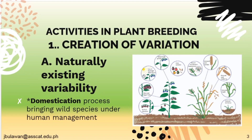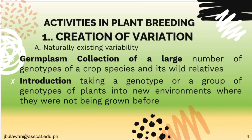The topic for today is the Creation of Variation. First, we have Naturally Existing Variability. There is a domestication process bringing wild species under human management. Naturally Existing Variability is a germplasm collection of a large number of genotypes of a crop species and its wild relatives. Second is introduction — taking a genotype or a group of genotypes of plants into new environments where they were not being grown before.